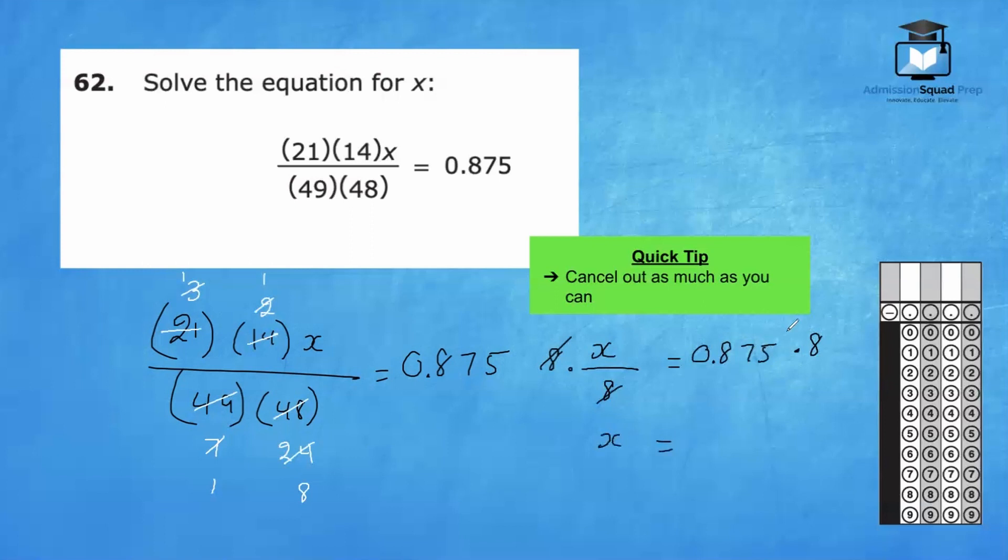Our final answer will be the product between 0.875 and 8. We know that our final answer will have three places after the decimal point. 8 times 5 is 40, carry the 4. 8 times 7 is 56 plus 4 is 60, carry the 6. 8 times 8 is 64 plus 6 is 70, carry the 7. And 8 times 0 is 0 plus 7 is 7. So our final answer here is 7. We will write in the number 7 here and bubble it in here at the bottom.